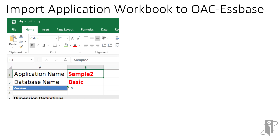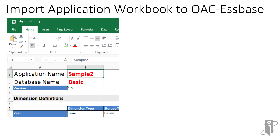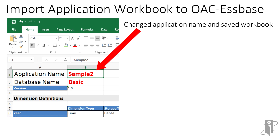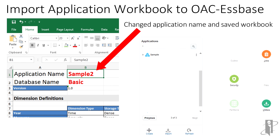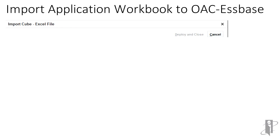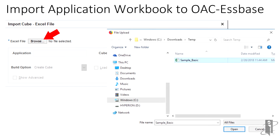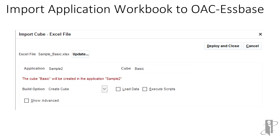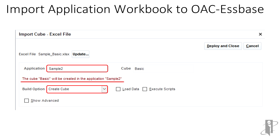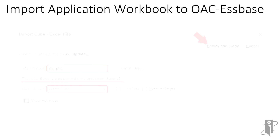To demonstrate how the application workbook can be used to create a cube in OAC, first modify the name of the app in the sample application workbook file to an app that doesn't already exist, then save the file. Log in to OAC ESpace, and at the bottom of the applications list, click the import icon. In the Import Cube dialog box, click Browse and select the application workbook file and click Open. The application name from the ESpace.cube sheet will be recognized and displayed in the application field. Optionally, check the boxes to load data and execute calc scripts, then click Deploy and Close. When completed, the new application and cube will be listed.